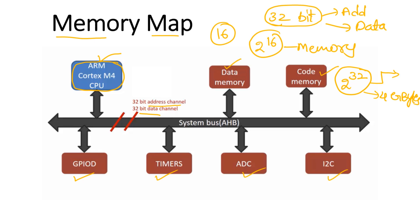Each peripheral is already allocated or assigned some addresses. If you want to modify or read data from a particular peripheral, first you have to know what address is allocated for that peripheral. For example, one register is present in the I2C peripheral.